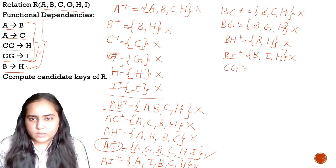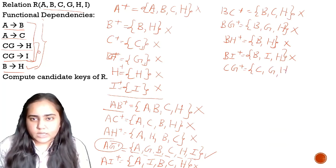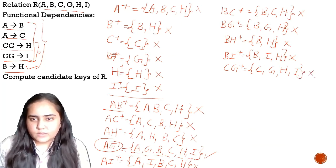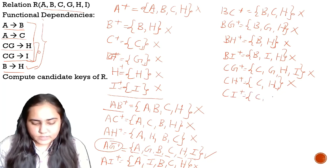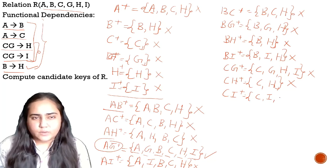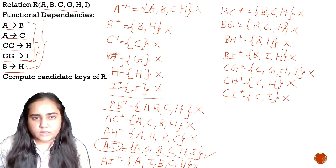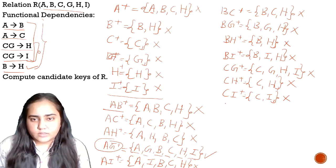Now let's try with C. CG-plus: I can add C and G. Because of C and G, I can add H and I, but I cannot add A and B — not a candidate key. CH-plus: C and H will be present, but because of those two I cannot add anything else — not a candidate key. CI-plus: I have C and I, but I cannot add anything else — not a candidate key.